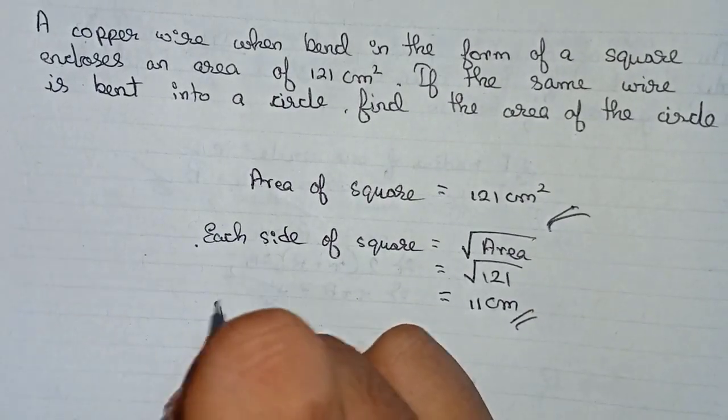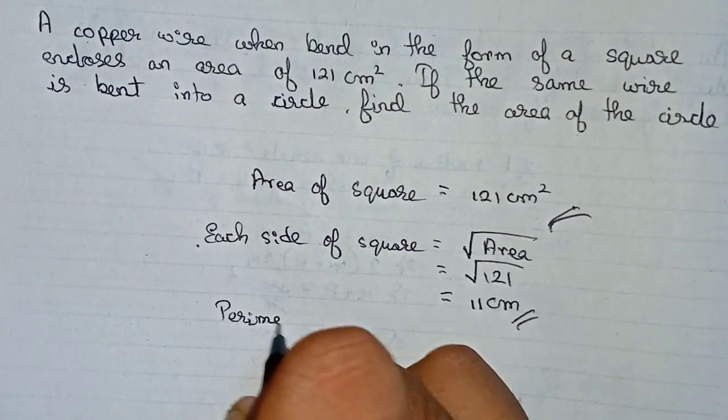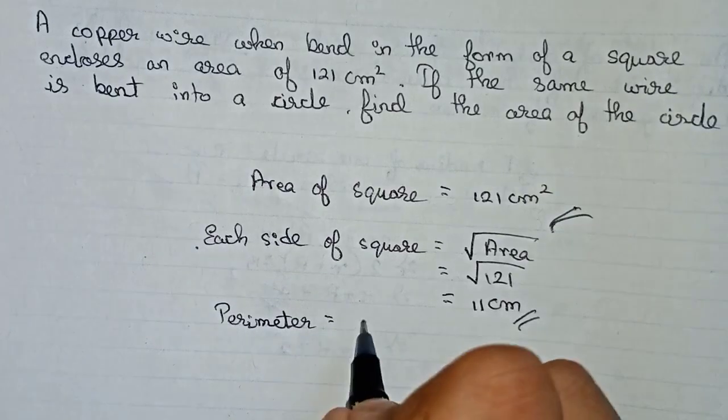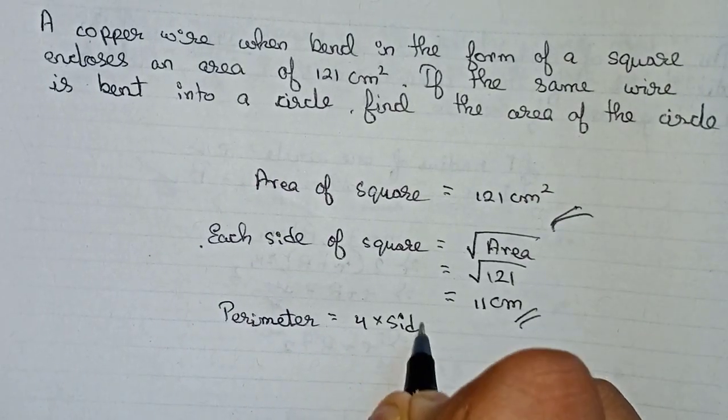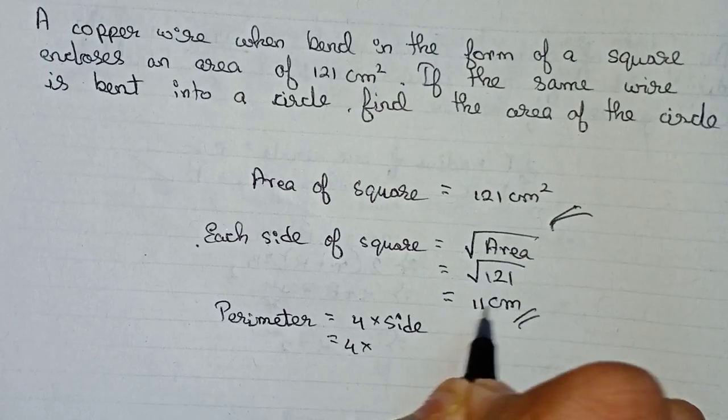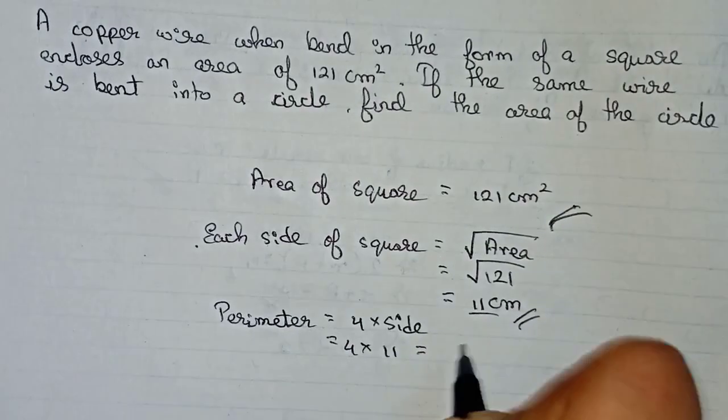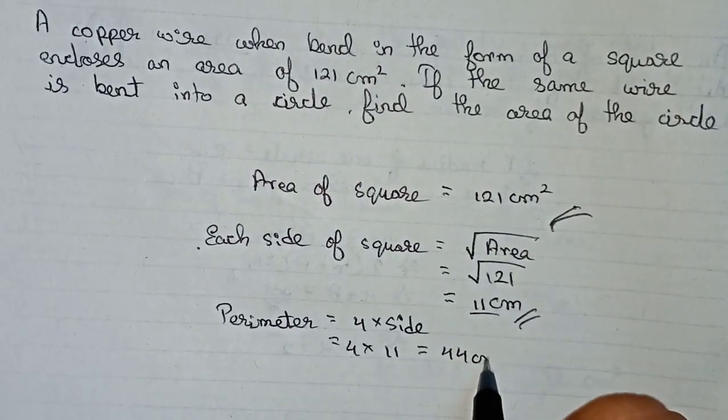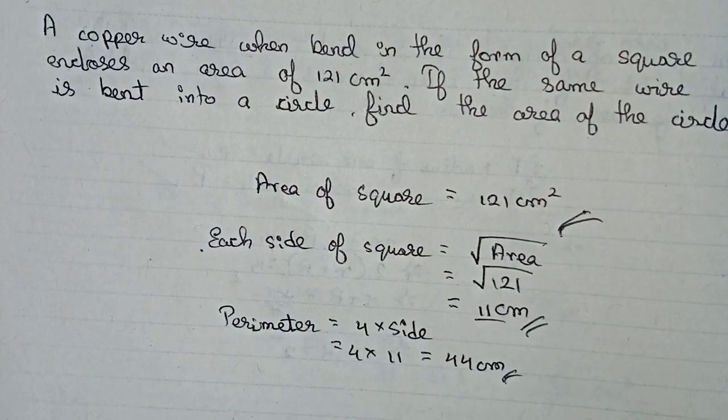Now I have to find out the perimeter. So perimeter will be 4 into side, so 4 into side means 11. So 4 into 11 means 44 centimeter. So this is the perimeter of the square.